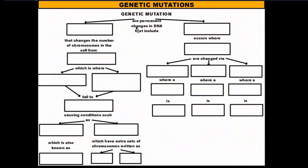A genetic mutation is basically a permanent change in the DNA. It could be in the DNA strand itself or in the number of chromosomes. We're going to take a look at two types: chromosomal alterations and gene mutations.